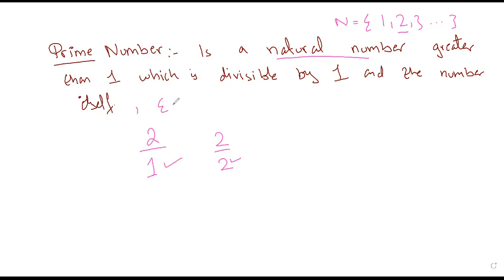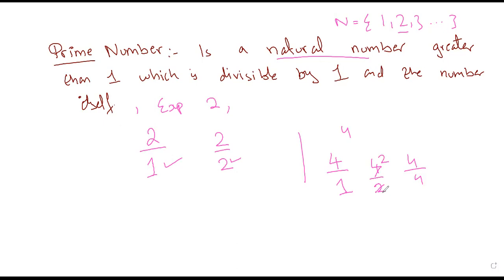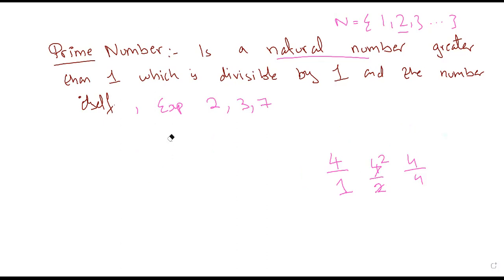Four can be divided by one, four, and also by two — so four has three factors: one, two, and four. Since a prime number has only two factors — one and the number itself — four cannot be a prime number. Two is a prime number, three is a prime number, seven is a prime number.